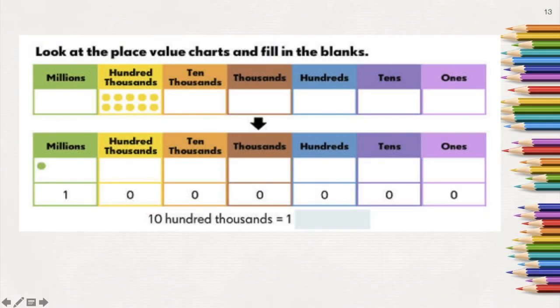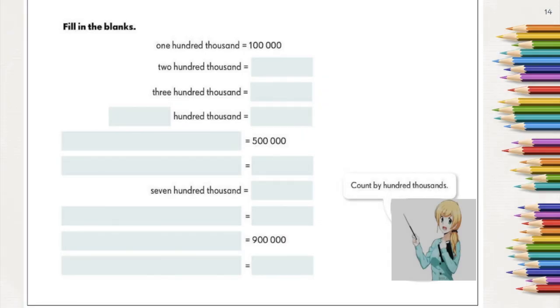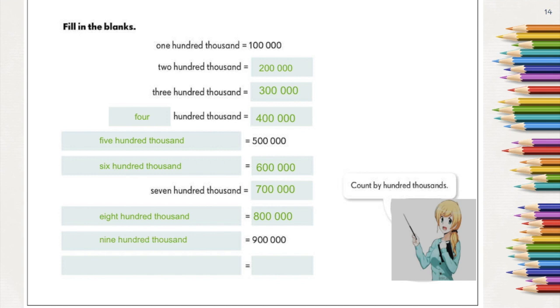Let's try to place a number in this place value chart. So if we have 10 hundred thousands, it's actually equal to 1,000,000. If we count by 100,000, we have 100,000, 200,000, 300,000, 400,000, 500,000, 600,000, 700,000, 800,000, 900,000. What comes after 900,000? It's 1,000,000.